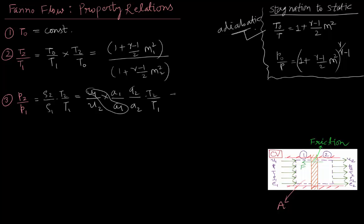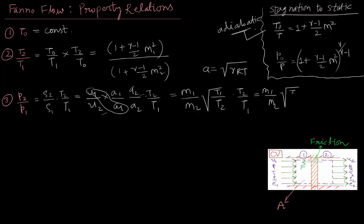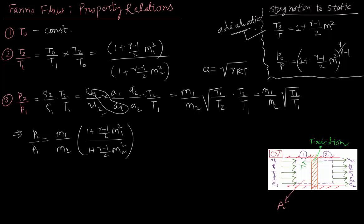U1 by A1 becomes M1, and U2 by A2 becomes M2. The speed of sound is A equals square root of gamma RT. Hence we can write A1 by A2 as the square root of T1 by T2. This implies P2 by P1 equals (M1 by M2) times the square root of (1 plus (gamma minus 1) by 2 times M1 squared) divided by (1 plus (gamma minus 1) by 2 times M2 squared).